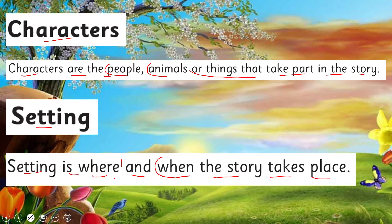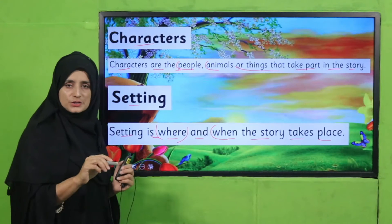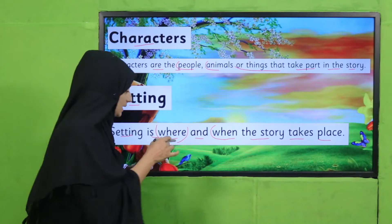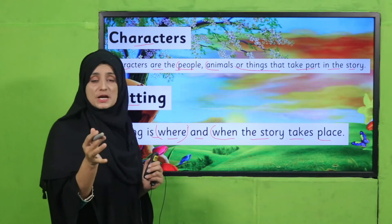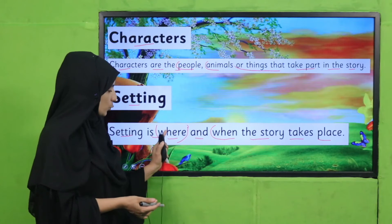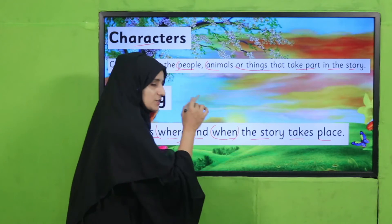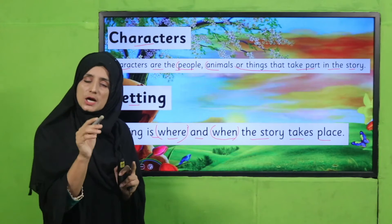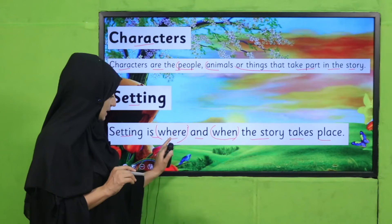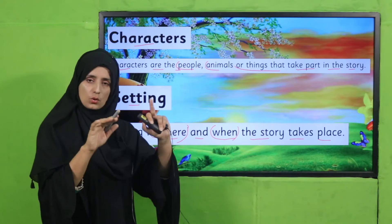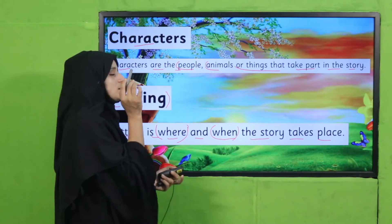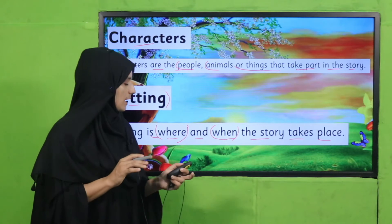Setting is where and when the story takes place. Setting means the place at which the story takes place — that is 'where.' And 'when' tells us about time. So setting tells us two things: time and place. These two things are the setting of the story.